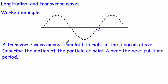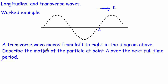What I'd like you to do is write down all the information in the question. We've got a transverse wave — we know it's transverse from its shape — and it's moving from left to right, so put an arrow to show the direction the energy is moving. We need to describe the motion of this particle at point A over the next full time period. Remember, the time period is the time it takes for the particles to perform one full oscillation.